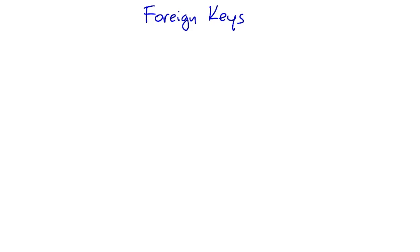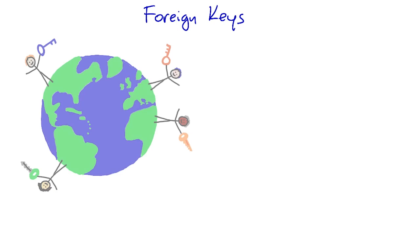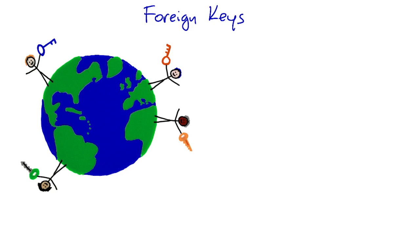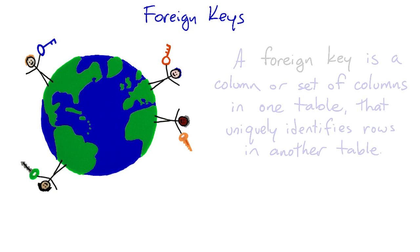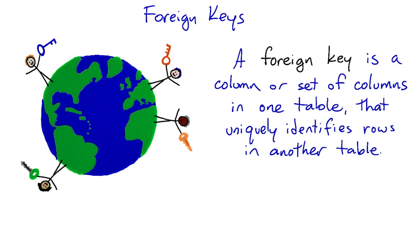In database terminology, a column with a references constraint on it is also called a foreign key. Now this always sounded like a bit of a weird term to me, like it was the key to a lock from far across the sea. But a foreign key is just a column or a set of columns in one table that uniquely identifies a row in another table.